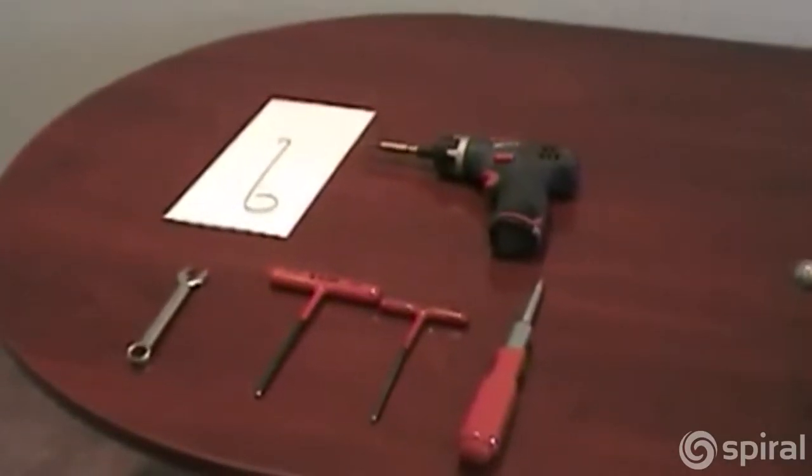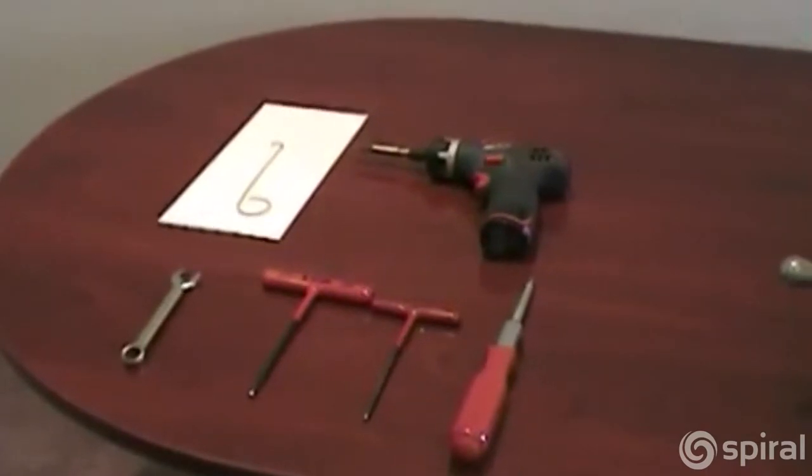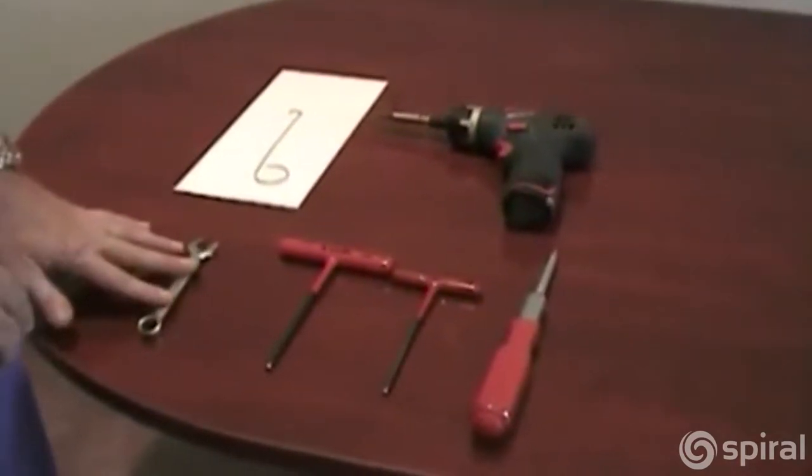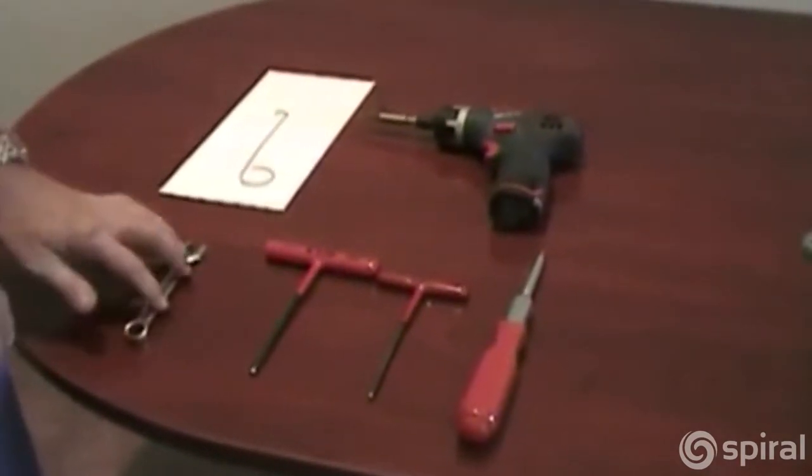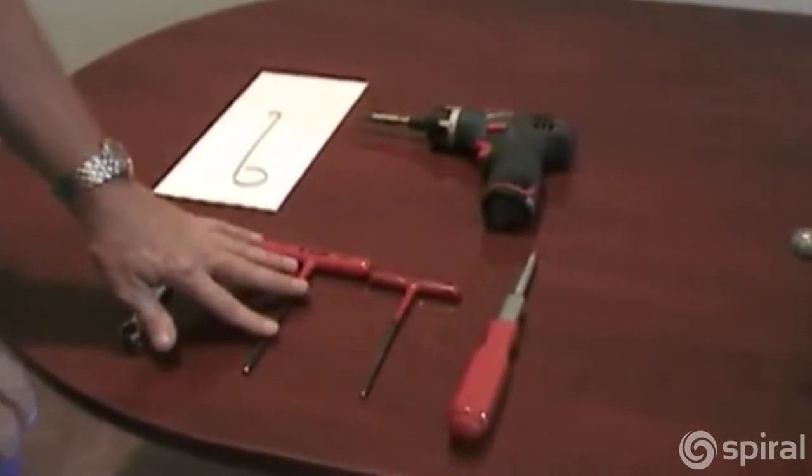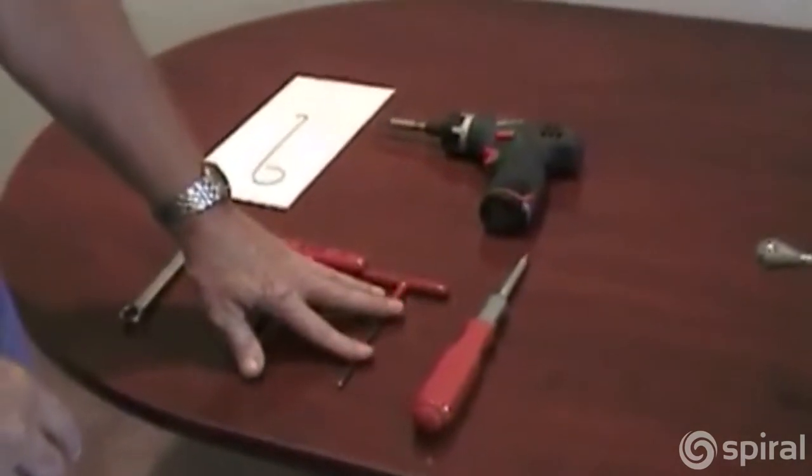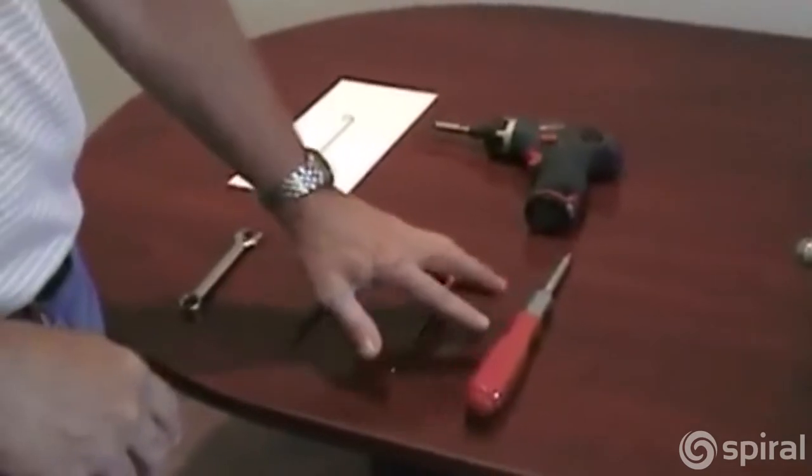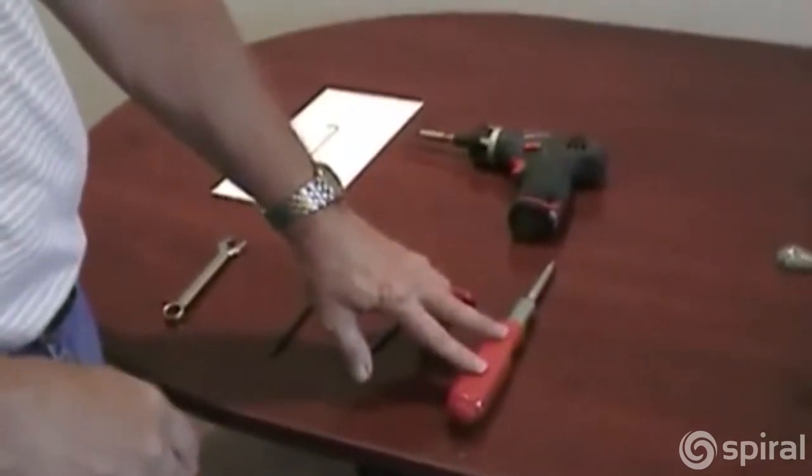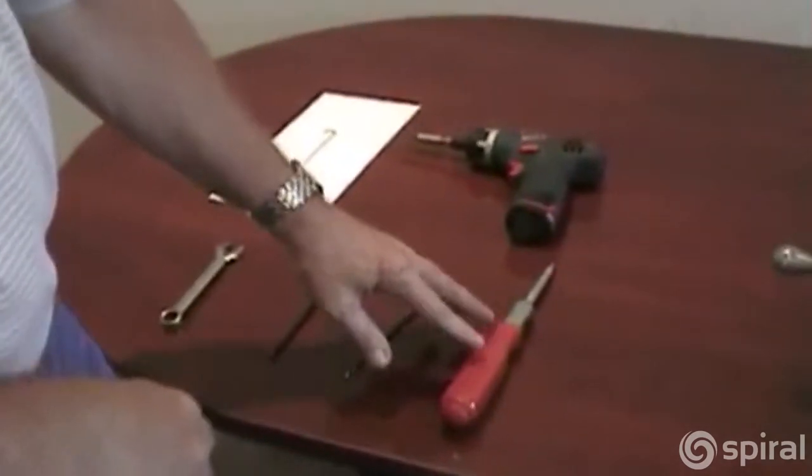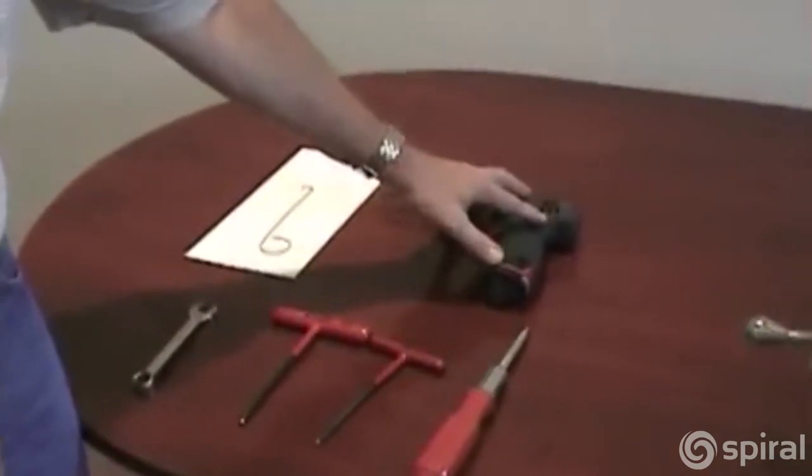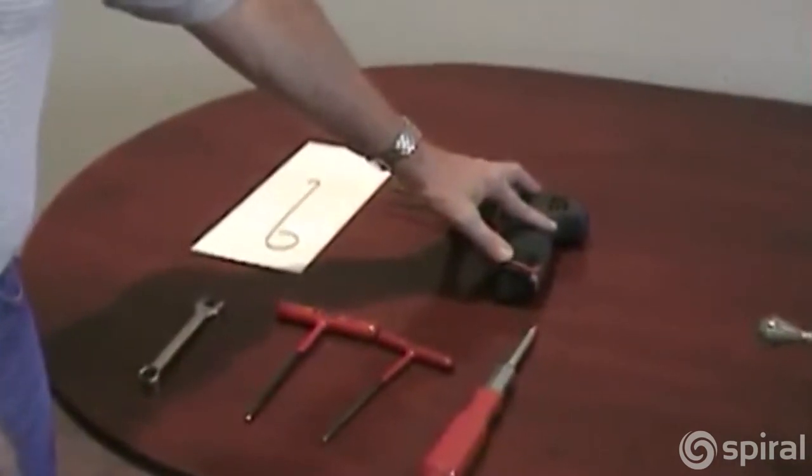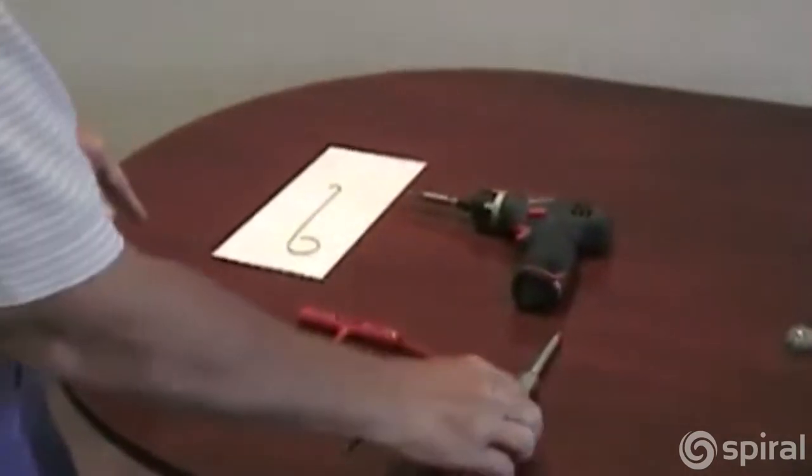To perform a blade change, you are required to have a half inch open or closed end wrench, a 3/16ths hex key, a 5/32nd hex key, and a standard number 2 Phillips. For this demonstration, I will be utilizing a 5/32nd powered hex key to speed things along.